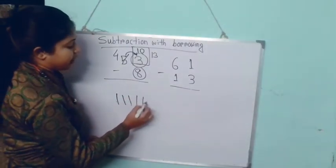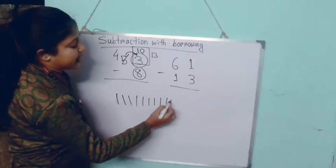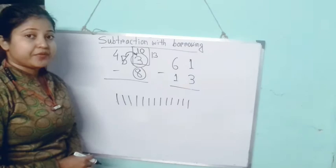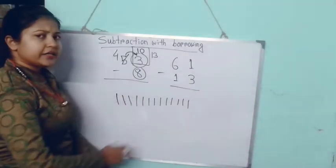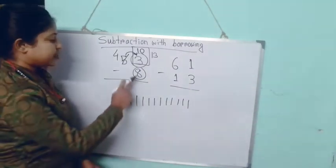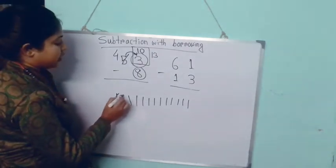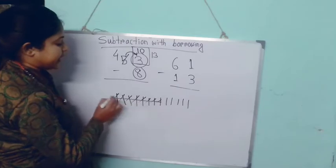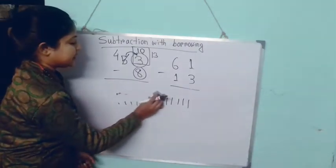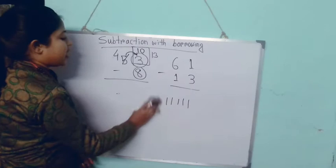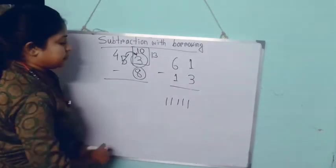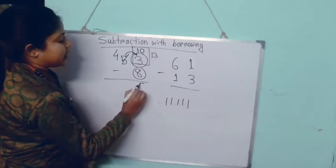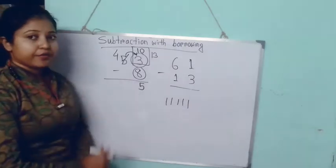We draw 13 lines: 1, 2, 3, 4, 5, 6, 7, 8, 9, 10, 11, 12, 13. Now we subtract 8 from 13 — it is very easy now. We cross 8 lines: 1, 2, 3, 4, 5, 6, 7, 8. Now how many lines are left? 1, 2, 3, 4, 5. So our answer here will be 5.